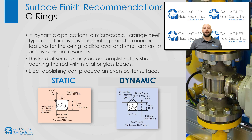In dynamic applications, a microscopic orange peel type of surface is optimal and can be described as containing smooth, rounded features for the O-ring to slide over and small craters to act as lubricant reservoirs. This preferred surface could be accomplished by shot-peening the hardware with metal or glass beads. An even better surface can be attained by electropolishing.